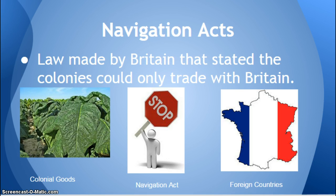You might say, what's the big deal — they're still buying the product. But the key issue is who controls the price. Great Britain is controlling the price because they're the only ones able to buy the product. A farmer couldn't say he wants $10 for a bale of tobacco if Great Britain only wants to pay $8, because who else would they sell it to? If they don't sell to Great Britain, they don't sell at all. Mercantilism does not work well for those being controlled, and in this case the colonists are the ones being controlled.